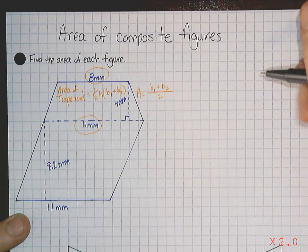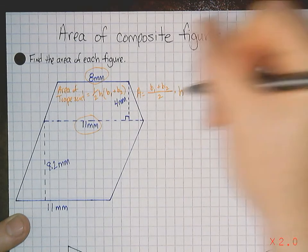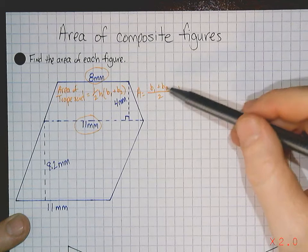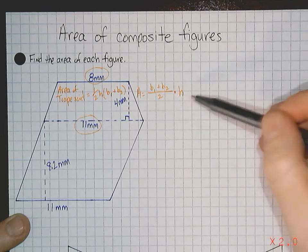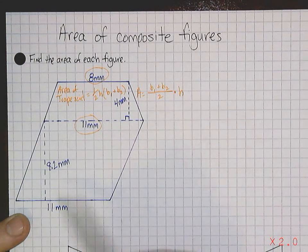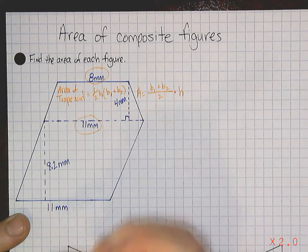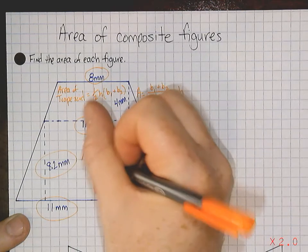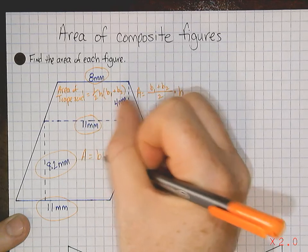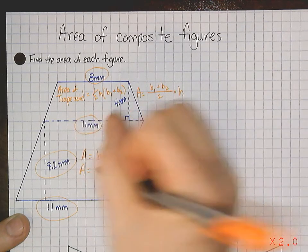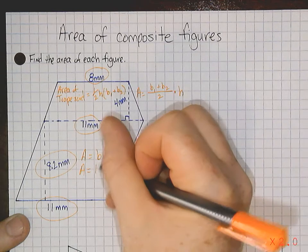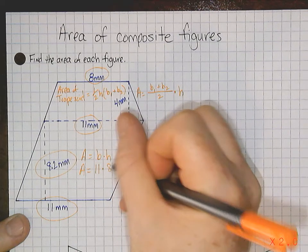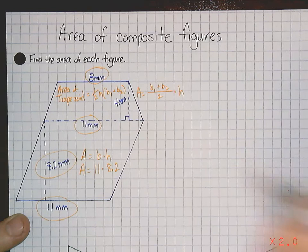The reason is I like to keep it base times height in that format, because the area of a parallelogram is base times height. Area equals base times height. In this situation, the only thing that makes it a little difficult is it has a decimal.